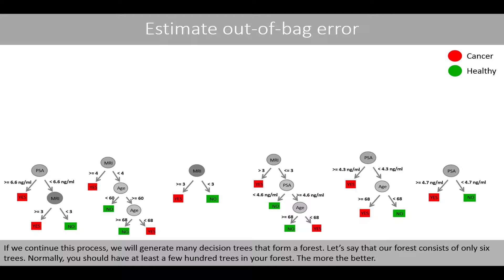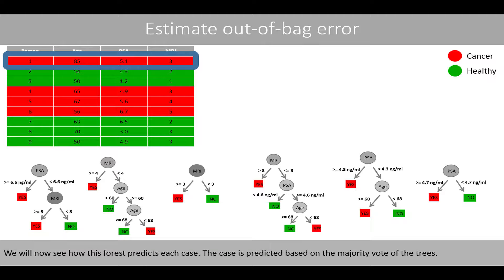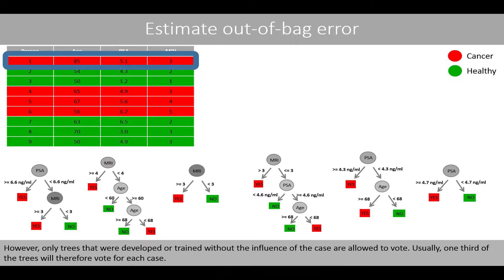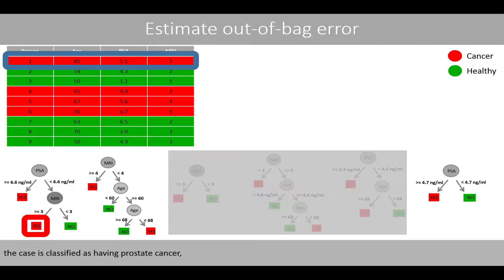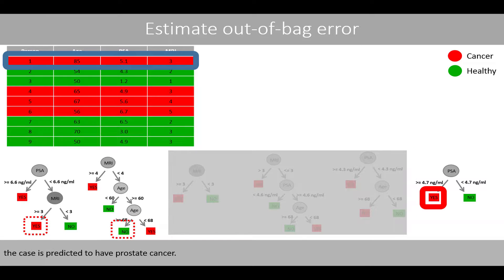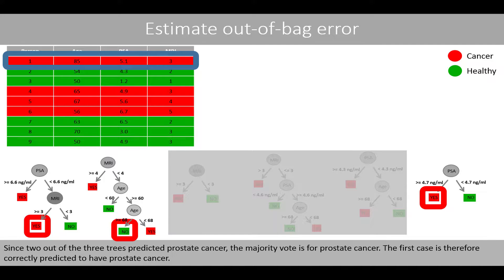If we continue this process, we generate many decision trees that form a forest. Let's say our forest consists of only six trees — normally you should have at least a few hundred trees. The case is predicted based on the majority vote of the trees. However, only trees that were trained without the influence of the case are allowed to vote, and usually about one-third of the trees will vote for each case. For example, the first case was not included in building three trees: the first tree predicts prostate cancer, the second predicts healthy, and the third predicts prostate cancer. Since two out of three trees predicted prostate cancer, the majority vote is for prostate cancer.